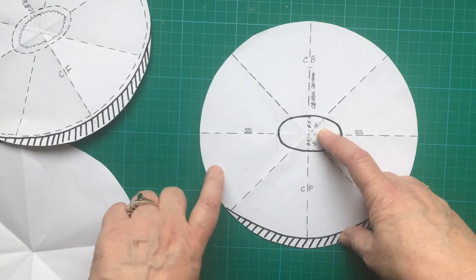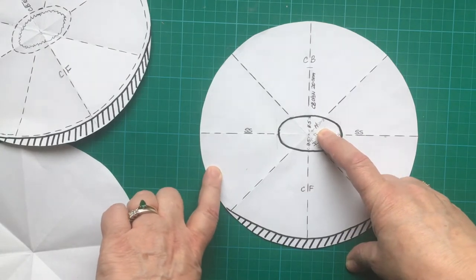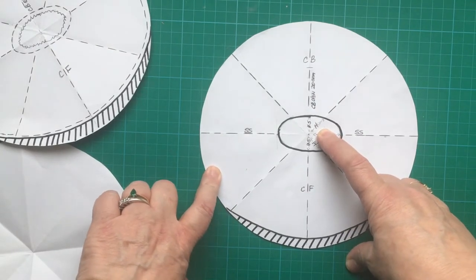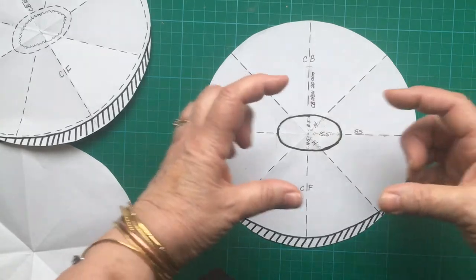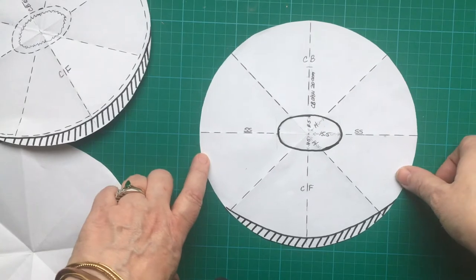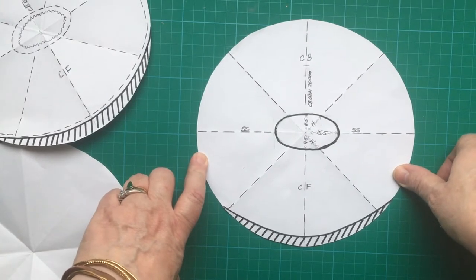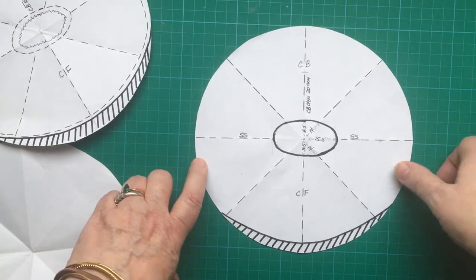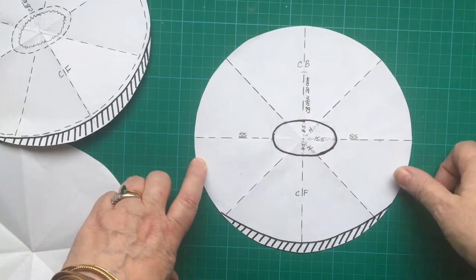Check that against your tutu. It's better smaller than too big. If it's too big your overlay won't fit properly. It'll start to gather and it won't lay flat.